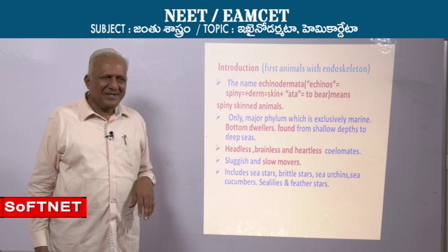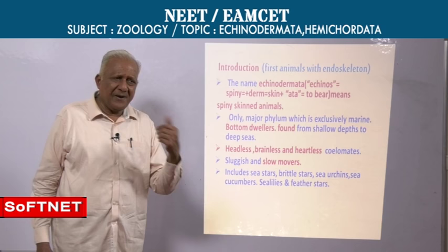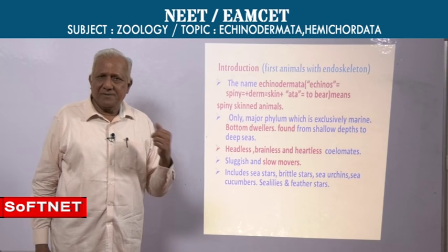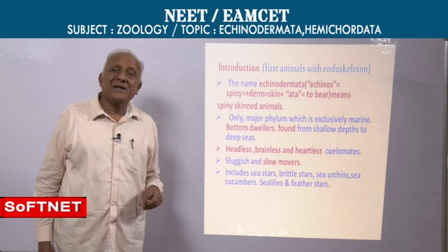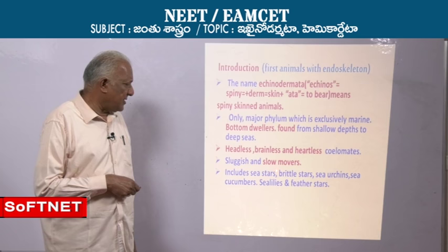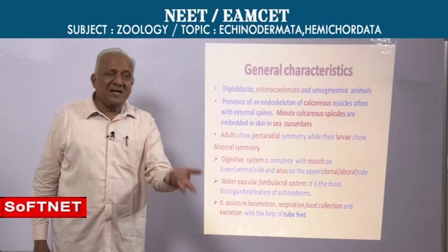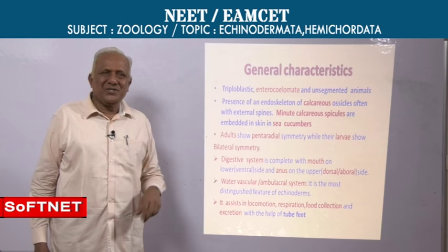They are triploblastic, not bilaterally symmetrical — they are pentaradially symmetrical. Coelomate animals without segmentation. Unlike the other coelomate non-chordates, here you find a different coelom. Echinoderms, hemichordates, and chordates are enterocoelmates — they have an enterocoelic coelom derived from mesodermal pouches of the archenteron.